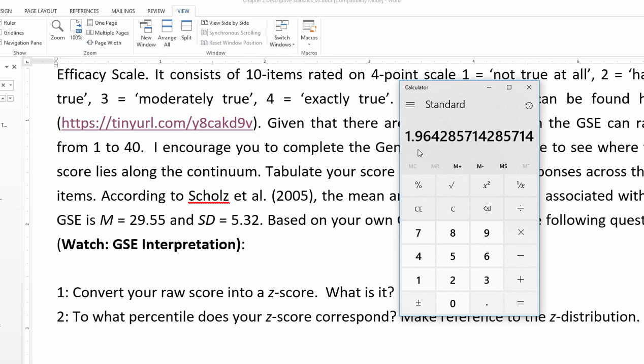Let's just say a person scored 21. So 21 minus 29.55 is negative 8.55, and then you divide that by the standard deviation 5.32 and I got a negative 1.607.